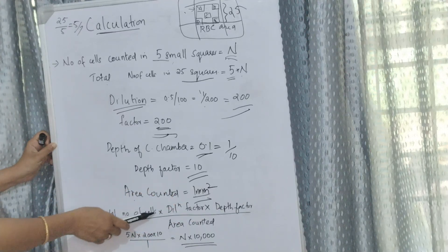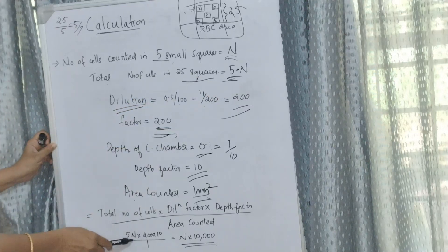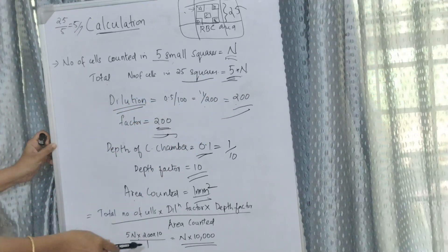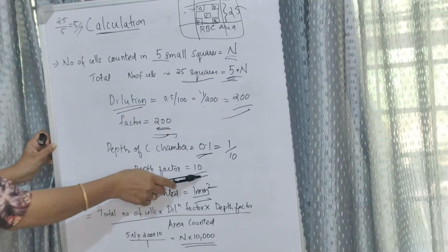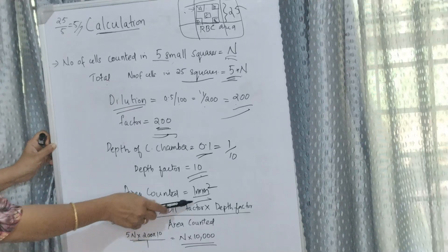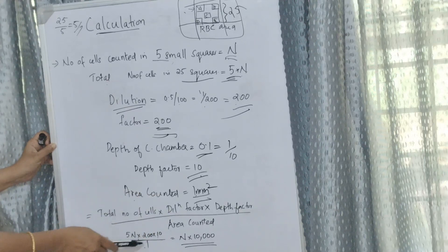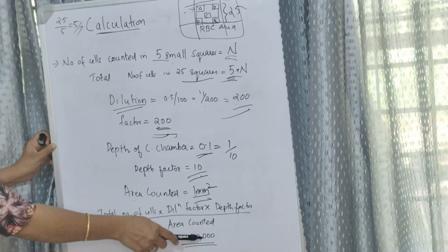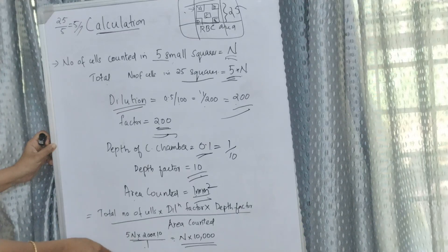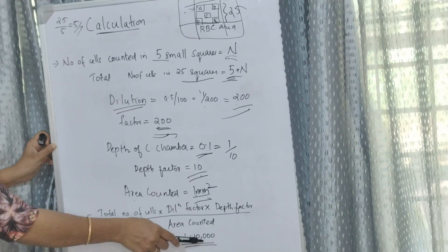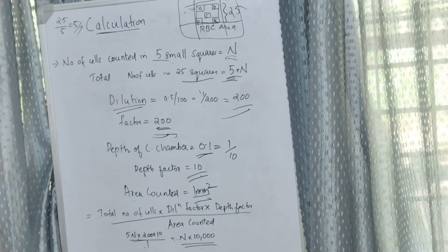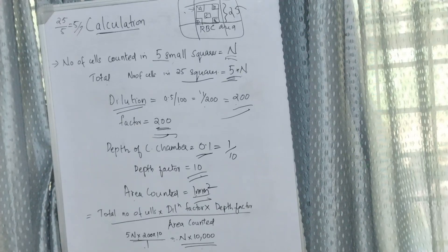Total number of cells times dilution factor times depth factor divided by area counted. That means 5N times 200 times 10 divided by 1 equals N times 10,000, which is the calculation factor for RBC counting.